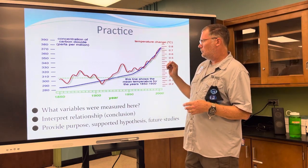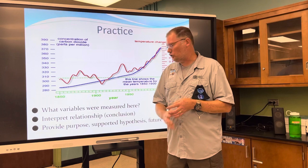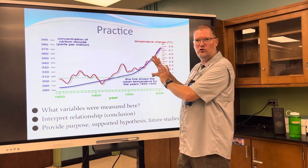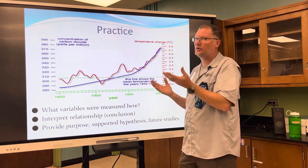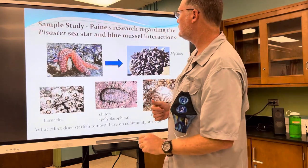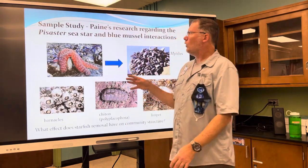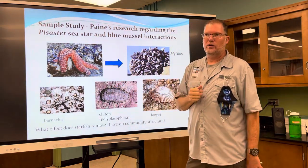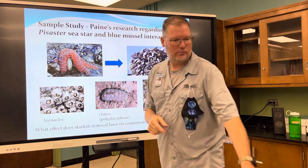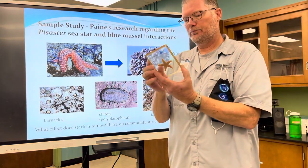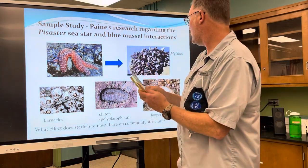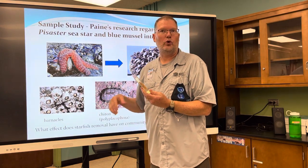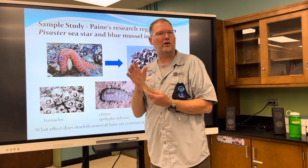When writing your conclusion, you have to support it by talking about the data collected — typically from a graph or chart. Here's an actual study with the sea star Pisaster — that's the genus name. This one is Asterias. Pisaster is from the west coast of North America off Oregon, Washington, and Northern California; Asterias is from the northeast coast of North America.